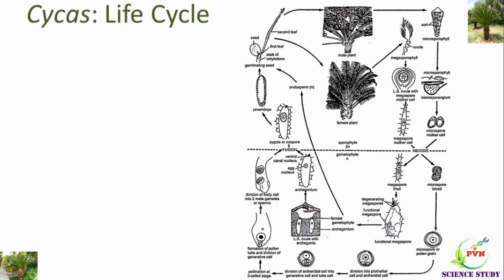This figure also shows the life cycle of Cycas in which we can see different parts of Cycas. This is the male Cycas plant and this is the female Cycas plant. The male Cycas plant produces microsporophyll, microsporangia, and microspore mother cell, whereas the female Cycas plant produces megasporophyll with the megaspore mother cell. The megaspore mother cell undergoes meiosis to produce a megaspore tetrad, and all other details we have already studied.